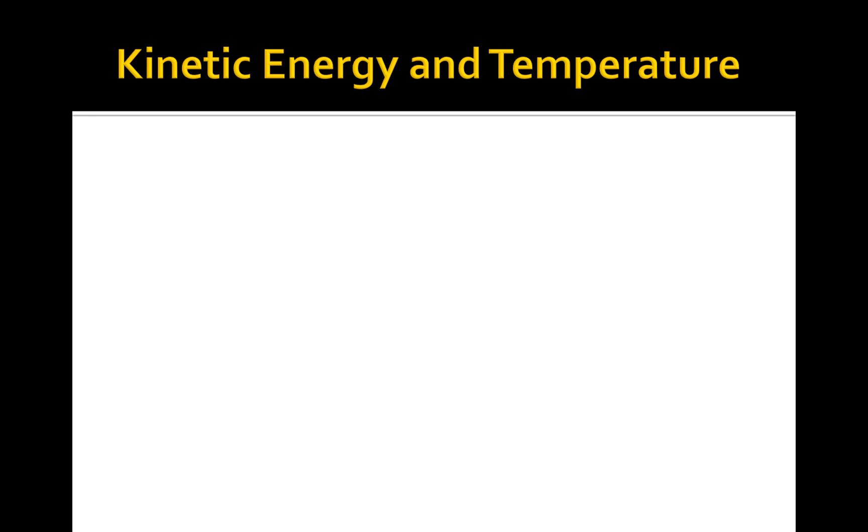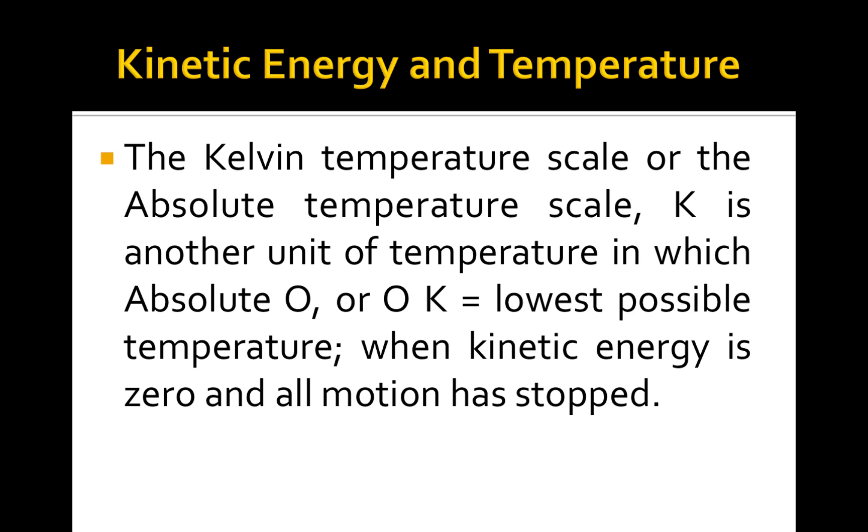Let's now consider kinetic energy and temperature as it relates to gases. The Kelvin temperature scale, or the absolute temperature scale, given by the units Kelvins, symbolized with a capital K, is another unit of temperature in which absolute zero, or zero K, is the lowest possible temperature. Absolute zero, or zero K, is when kinetic energy is zero and all motion has stopped.